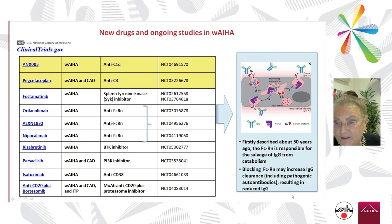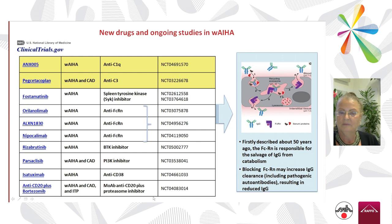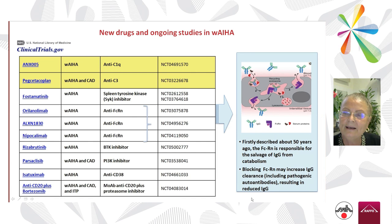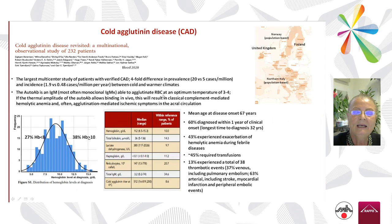These include drugs targeting autoantibodies, fostamatinib — a spleen tyrosine kinase inhibitor — and other inhibitors like BTK, PI3K, as well as other monoclonal antibodies targeting plasma cells or combinations of drugs. It is a very interesting field with many drugs in development.